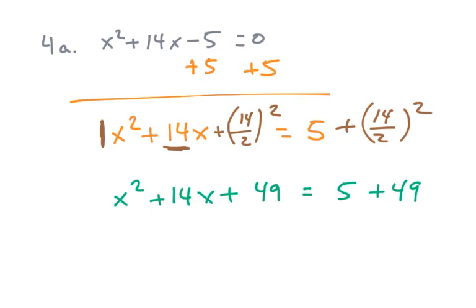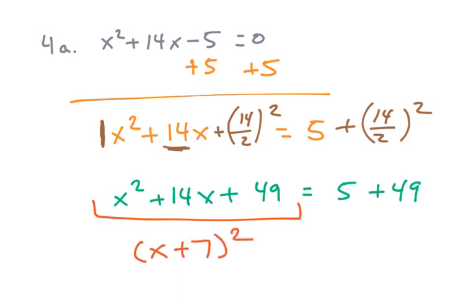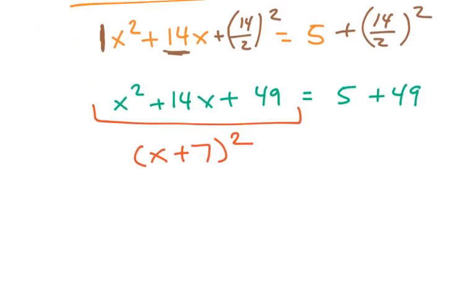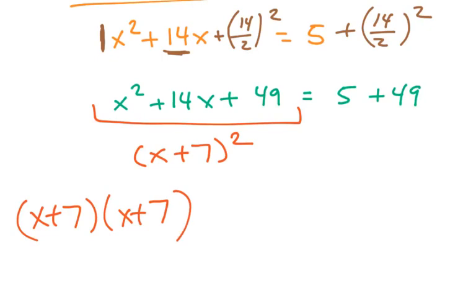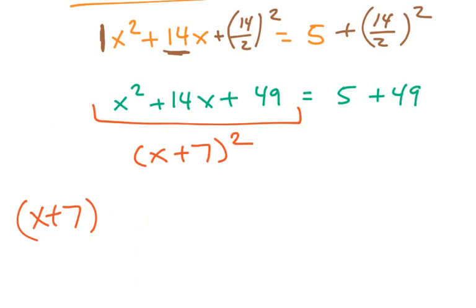What then will happen is all of this — and this is why we complete the square — it becomes x plus seven squared. If you don't believe me, you can FOIL out x plus seven squared. Remember x plus seven squared is x plus seven times x plus seven. So you FOIL that out and you will arrive back at x squared plus 14x plus 49.